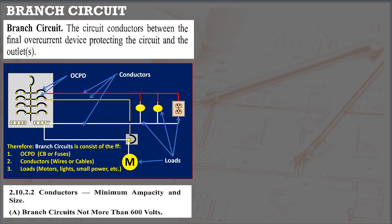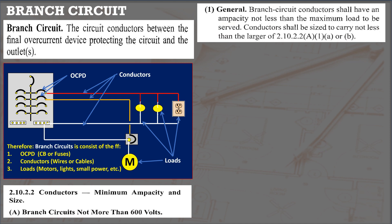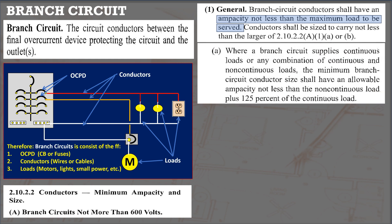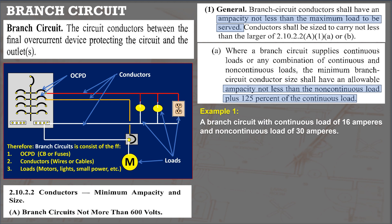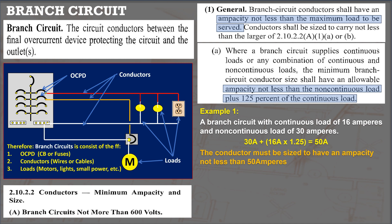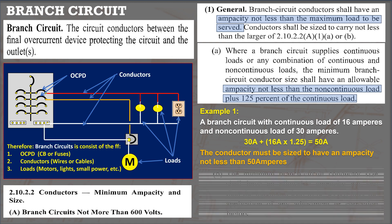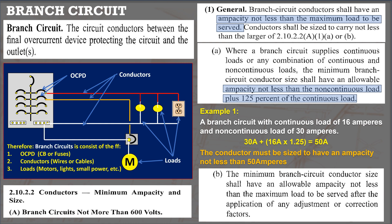How to determine conductor size for branch circuits? In Section 2.10.22, the ampacity of a branch circuit conductor must not be less than the maximum load it serves. If carrying a continuous load or a combination of non-continuous and continuous load, the minimum branch circuit conductor shall not be less than the non-continuous load plus 125% of the continuous load. For example, a branch circuit with a continuous load of 16 amperes and a non-continuous load of 30 amperes gives a total of 50 amperes; therefore, the minimum conductor size shall not be less than 50 amperes. We also need to consider adjustment and correction factors.